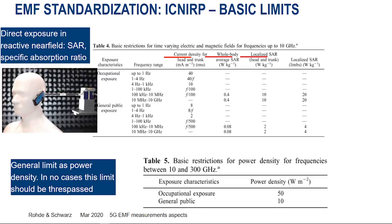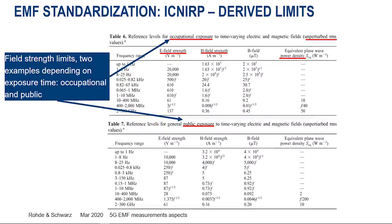We talk about the SAR, the Specific Absorption Ratio. You see here a photo of an artificial head filled with non-electric material. We measure the power radiated into this artificial head to measure the EMF exposure, the Specific Absorption Ratio. In the table below, we have a general limit — a threshold that we should not trespass under any circumstances. This is the red line.